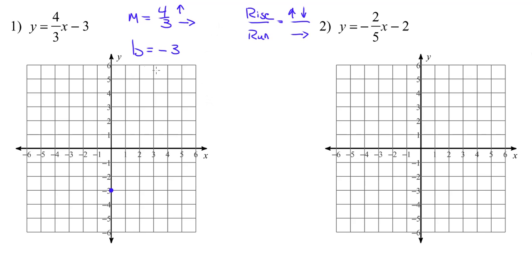So with the slope of 4/3, we begin at negative 3 on the y-intercept, move up 4 and right 3, and place our new point.